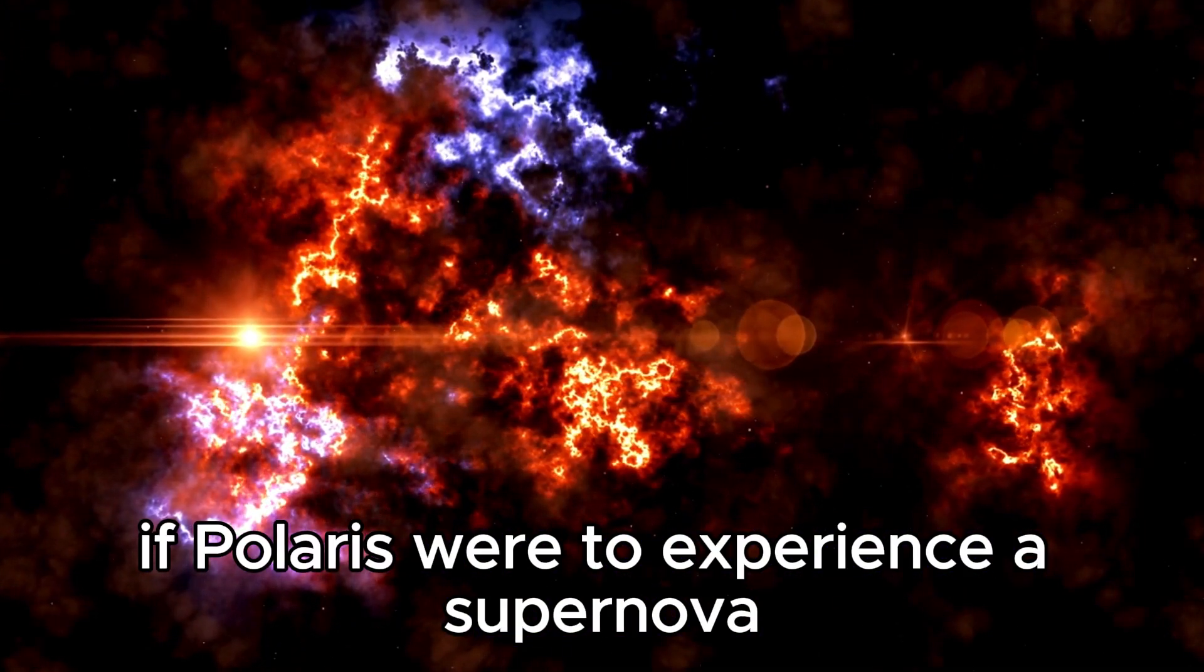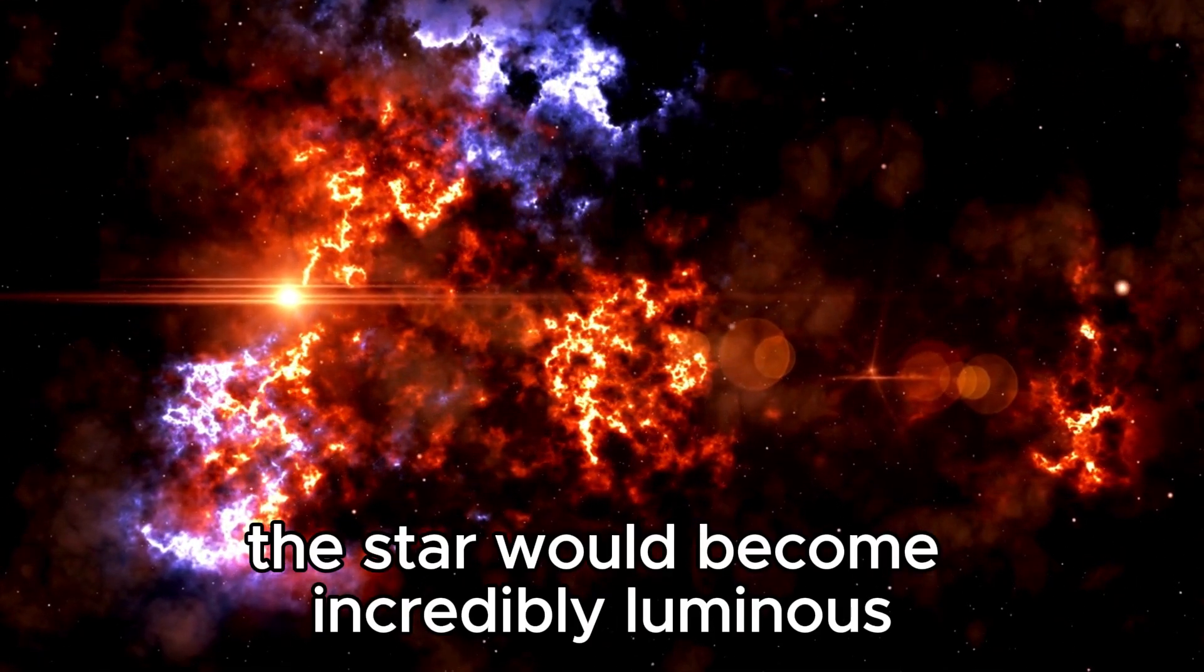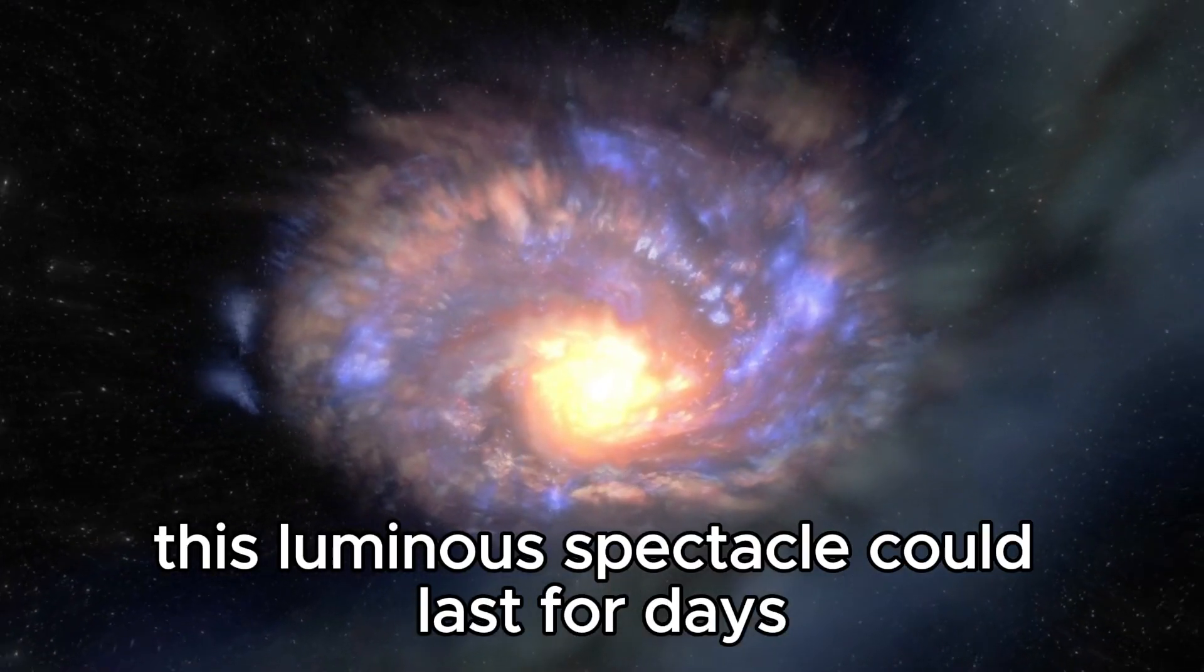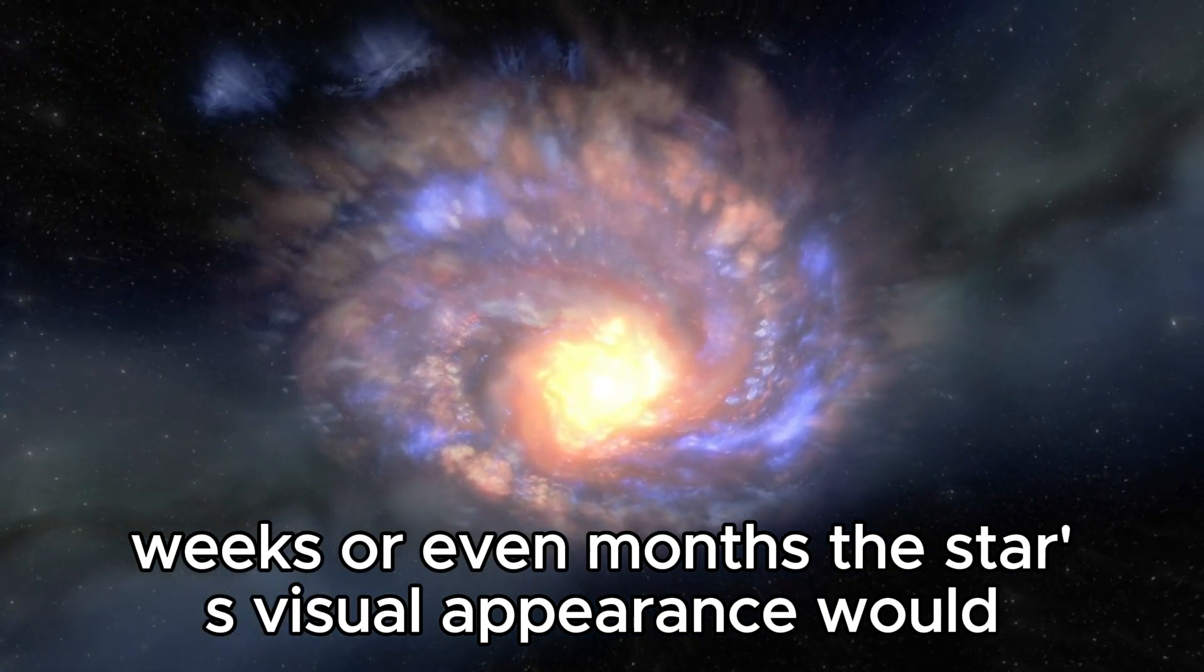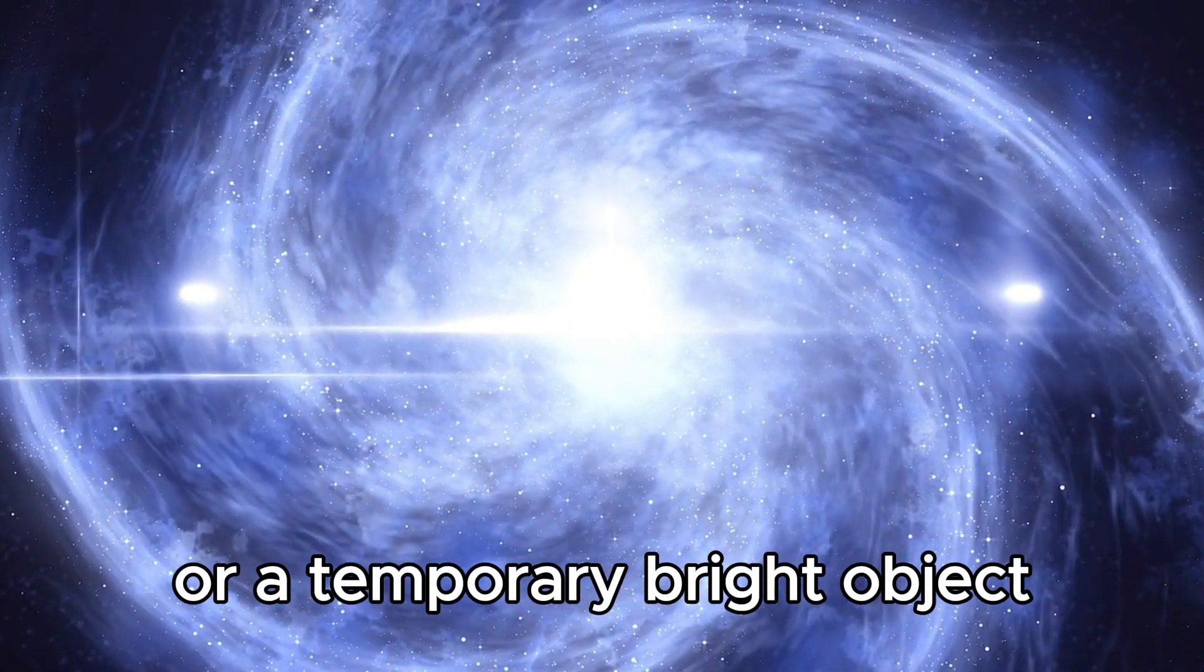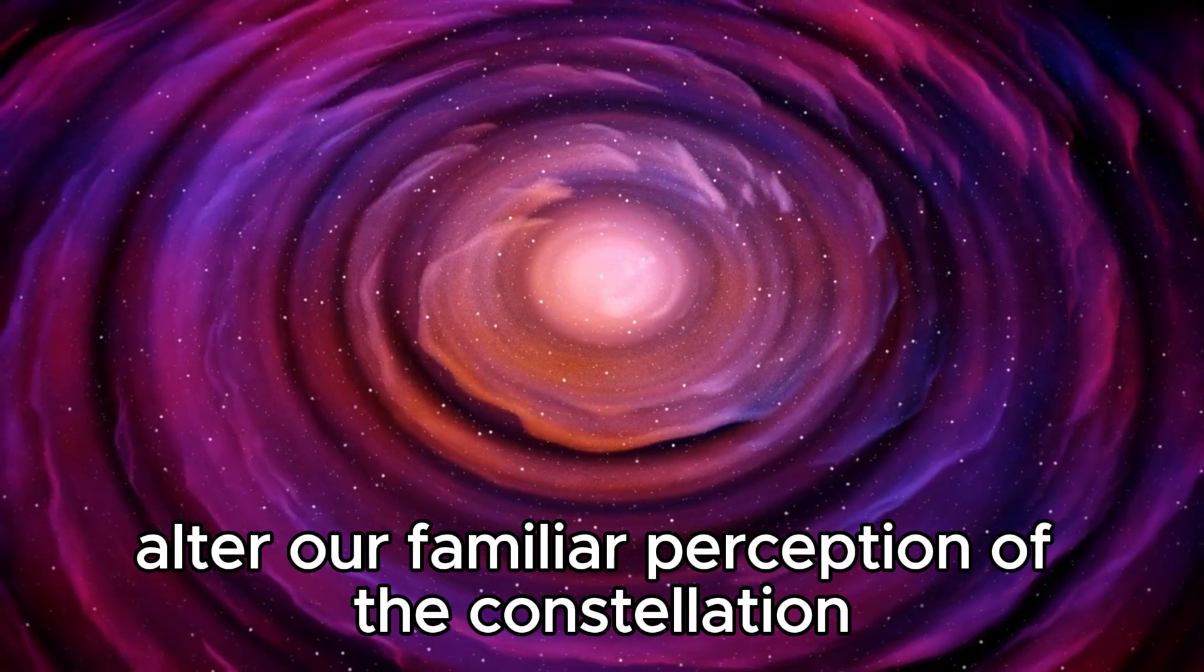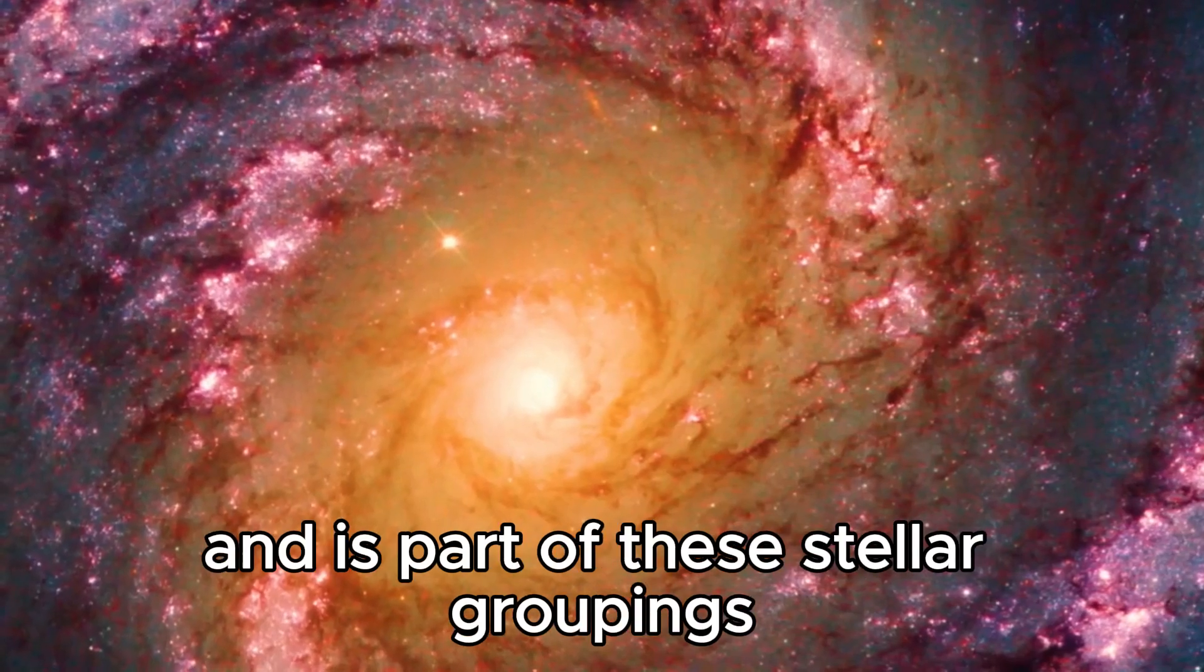If Polaris were to experience a supernova, we would surely witness an amazing event in our sky. The star would become incredibly luminous, eclipsing even the brilliance of the moon and becoming one of the brightest objects in the night sky. This luminous spectacle could last for days, weeks, or even months. The star's visual appearance would undergo drastic changes. It would transform into a dazzling point of light or a temporary bright object, potentially manifesting colors before fading. This visual display could momentarily alter our familiar perception of the constellation Ursa Major or Ursa Minor, since Polaris is actually the north star and is part of these stellar groupings.